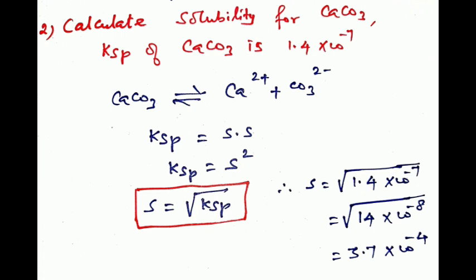We rewrite 1.4×10⁻⁷ as 14×10⁻⁸. The square root of 14 is approximately 3.7, and the square root of 10⁻⁸ is 10⁻⁴. Therefore, the solubility S equals 3.7×10⁻⁴ mol/L.